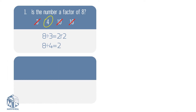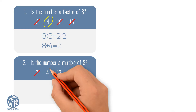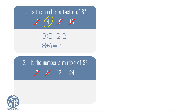Let's try another question. Is the number a multiple of 8? Multiples are greater than or equal to 8, so we can cross out 2 and 4 because they're less than 8. To check if 12 and 24 are multiples of 8, we list the multiples of 8 by multiplying 8 by counting numbers. The multiples of 8 are 8, 16, 24, 32, and so on. 12 is not on the list, so it's not a multiple of 8. 24 is on the list of multiples, so it's a multiple of 8.